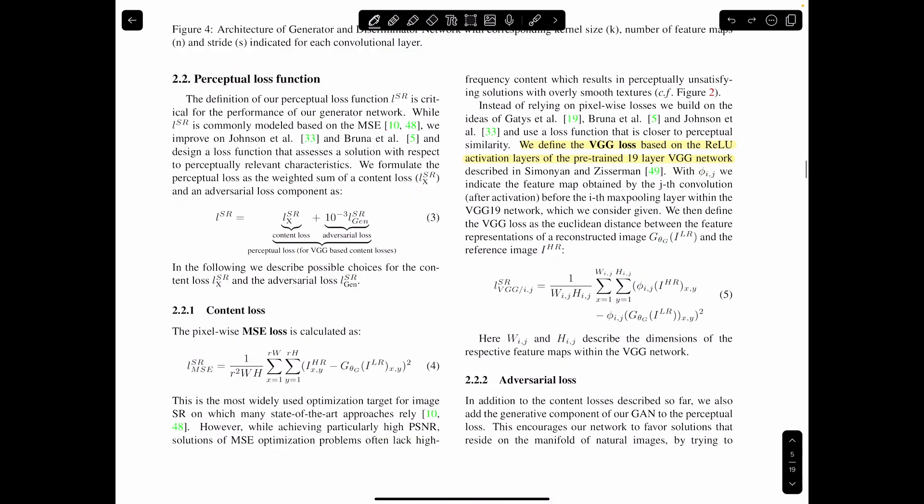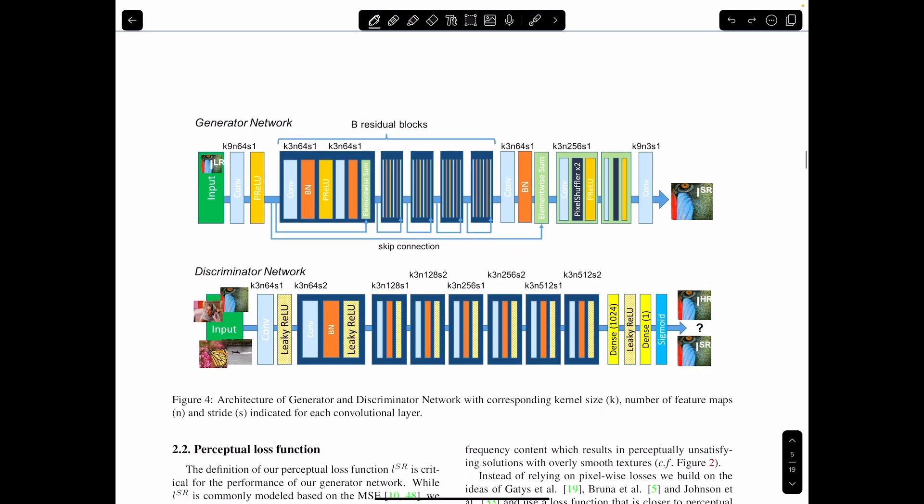Alright, so this is going to be the structure of the GAN. So in the middle here, they have their residual network. The discriminator also has these blocks. And then the input is going to be a low-resolution image.